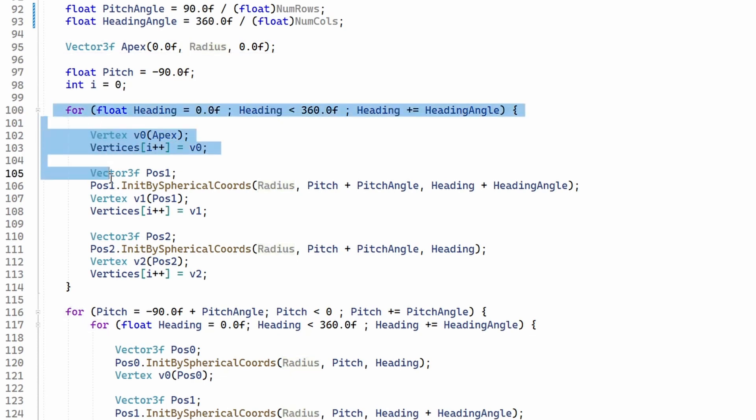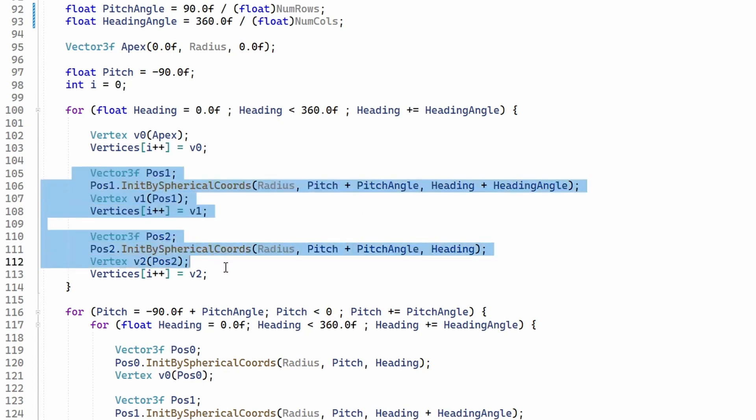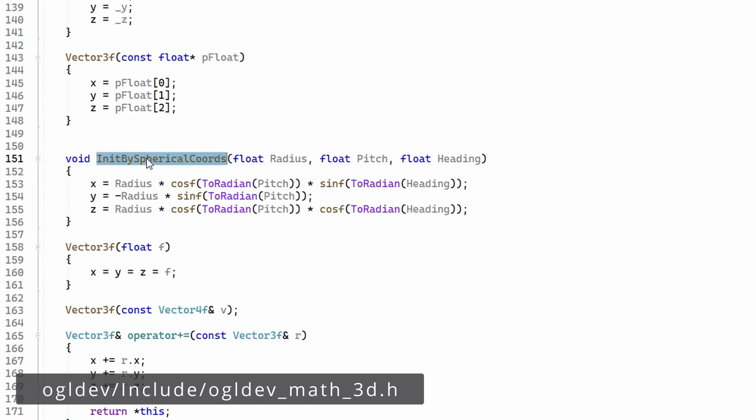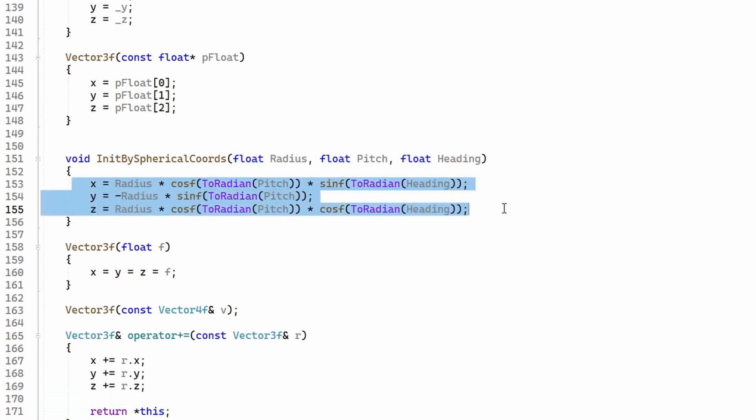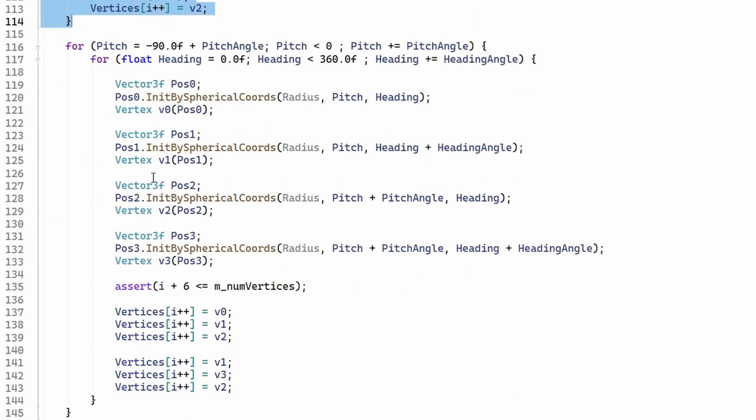It initializes one vector here for the apex of the sphere which is going to be reused for the topmost strip. We create this strip right here by going all around from zero to 360 and we initialize three vertices each time. Okay so first we have the apex which is reused and a couple of vertices below the apex. Okay because the apex is located at minus 90 degrees so by adding the pitch angle we go to the next row below it. So the two vertices share the same pitch and for the heading we use the current iterator of the loop and the next one. And this function init_by_spherical_coordinates translates from the spherical coordinates to the Cartesian as we saw earlier.